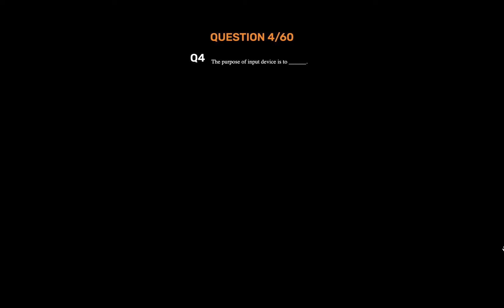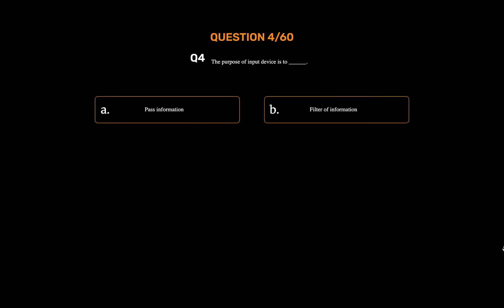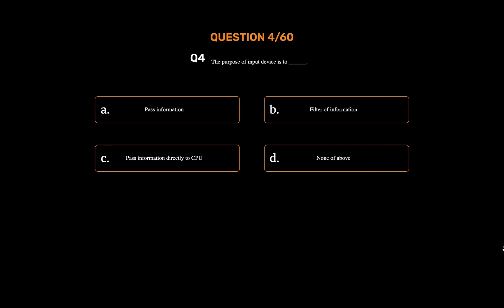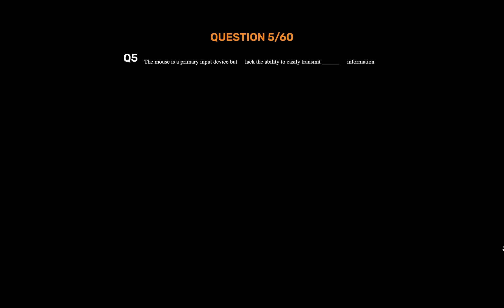Question number four. The purpose of an input device is to underscore. Option A: Pass information. Option B: Filter information. Option C: Pass information directly to CPU. Option D: None of the above. The correct answer is Option A: Pass information.